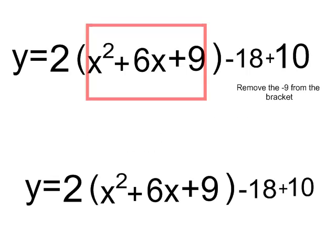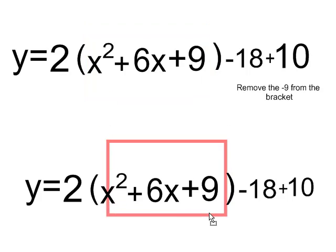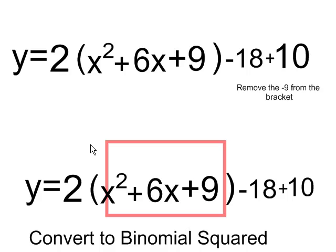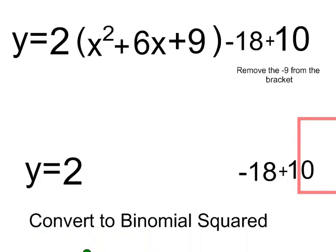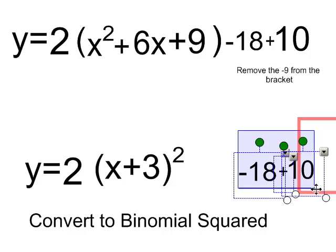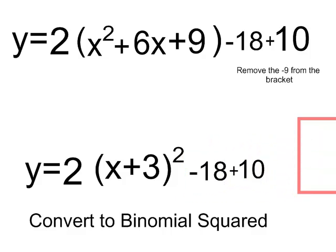So now I have my perfect square trinomial right where I want it. What I'm going to do next is convert it to a binomial squared. So I can remove this part and put in an equivalent form, which is x plus 3 all squared. I can also simplify this portion, which is minus 18 plus 10, into a negative 8. And now I know exactly what my parabola looks like based on its vertex form.